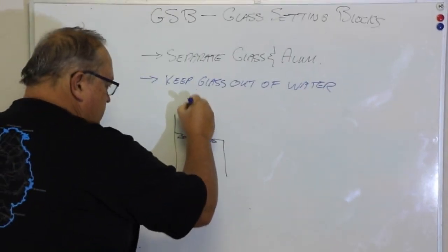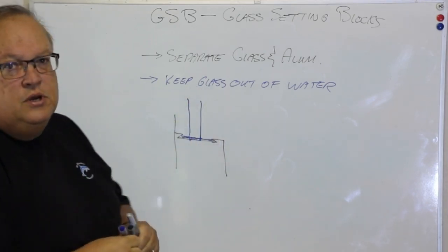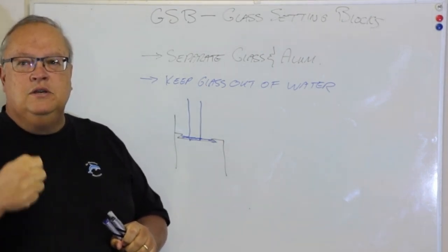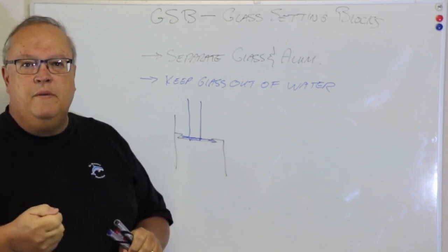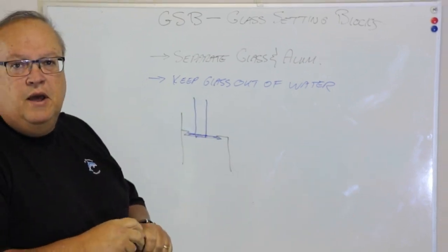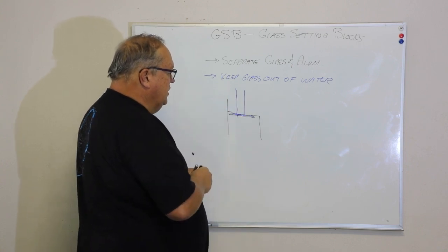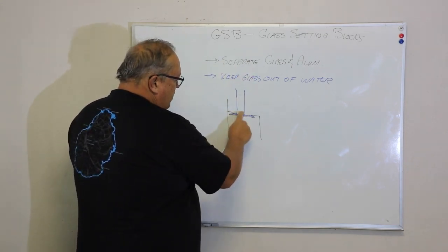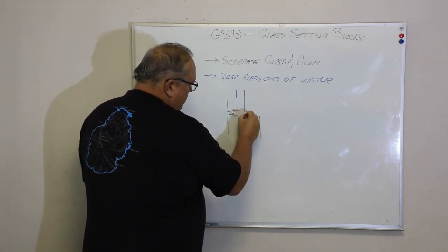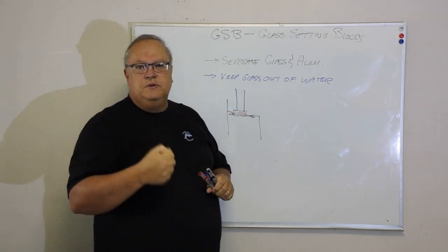And if my glass is sitting straight down onto my aluminum, then that glass can lie in the water. And another requirement is that your glass may not sit in water, particularly for your laminated glasses because it causes that glass to actually delaminate. So your glass setting block, which is now going to be sitting in this position here, is going to prevent that piece of glass from sitting in the water.